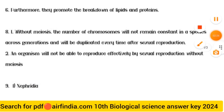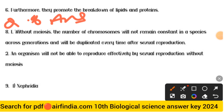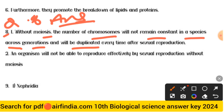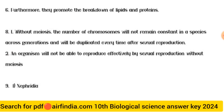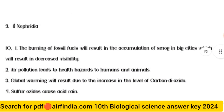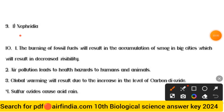The answer to question eight — meiosis: Without meiosis, the number of chromosomes will not remain constant in a species across generations and will be duplicated every time after sexual reproduction. An organism will not be able to reproduce effectively by sexual reproduction without meiosis. The answer to question nine (a) is: nephridia.